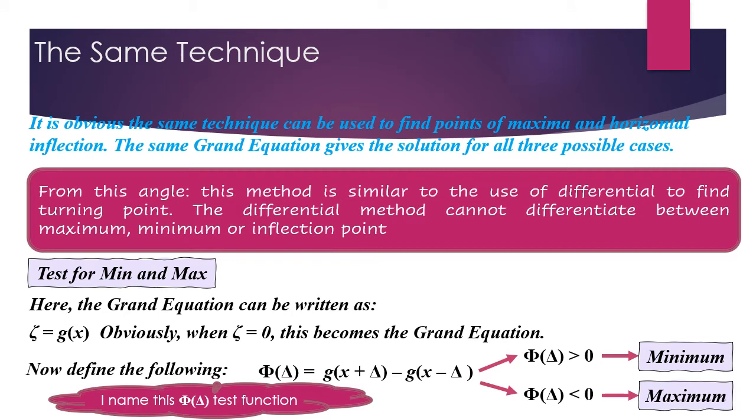I introduce a new equation here. And this new equation is phi of delta. The phi of delta basically coming from the fact of the difference between my function in which I introduced it from the first part, plus and then take away at minus. If this value comes out to be greater than zero, then it means my point is minimum. And if this point comes out to be less than zero,